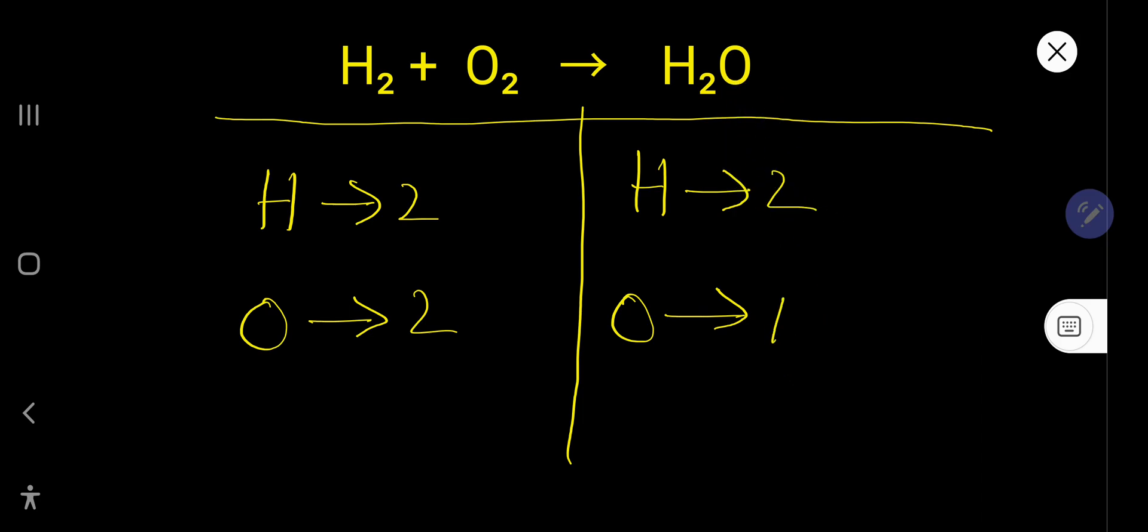So to balance this equation means we have to balance the number of hydrogen and oxygen from both sides. Here hydrogen 2, 2, so hydrogen is already balanced. Oxygen here 2, here 1, so we have to balance the oxygen.